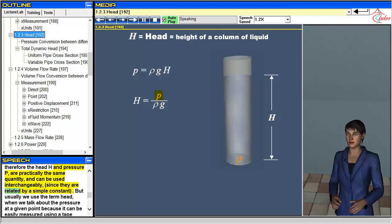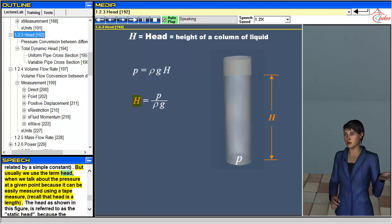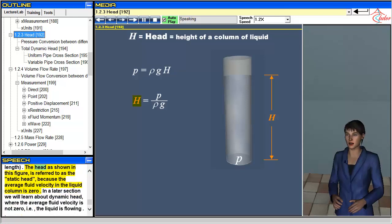Usually we use the term head when we talk about the pressure at a given point because it can be easily measured using a tape measure. Recall that head is a length. The head as shown in this figure is referred to as the static head, because the average fluid velocity in the liquid column is zero.